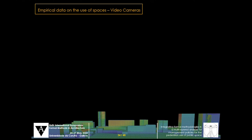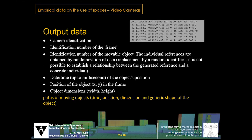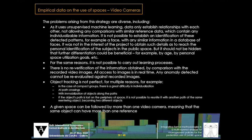It's compatible with available computers and even so obtains very relevant information. The technique is to analyze change between successive frames, very similar to the compression techniques that everyone knows and are using in video images. Change between frames do not allow you to individualize objects, but allow you to reach very significant information. Briefly, we arrive to paths of moving objects. Time, position, dimensions, and the generic shape of the object, which allow fruitful analysis in terms of the use of public space, but not in any personal identification. The problems arising from the strategy are diverse, including the AI methods are reduced to unsupervised techniques. There is no re-verification of the information obtained by comparison with the recorded video image. Object tracking is not perfect for multiple reasons. For example, in the case of compact groups, there is a great difficulty in individualization.